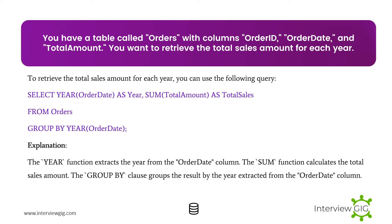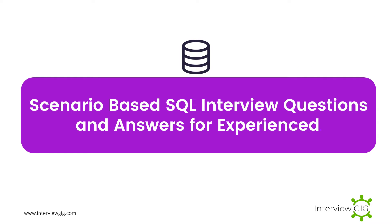Next Scenario: You have a table called Orders with columns Order ID, Order Date, and Total Amount. You want to retrieve the total sales amount for each year. To do this, you can use the following query. The YEAR function extracts the year from the Order Date column. The SUM function calculates the total sales amount, and the GROUP BY clause groups the result by the year extracted from the Order Date column.